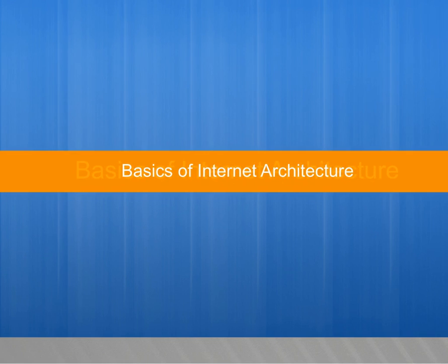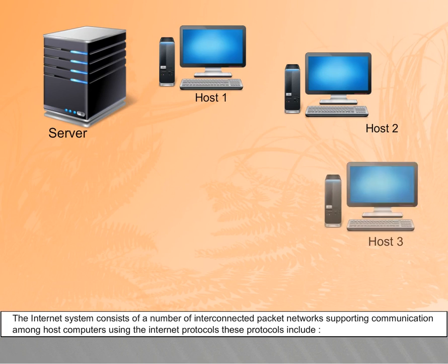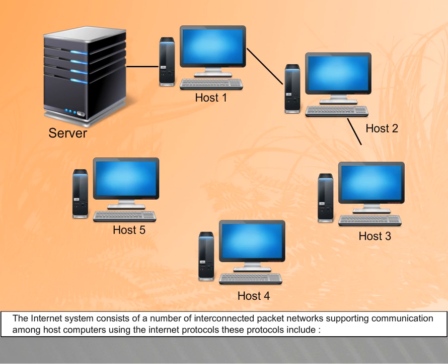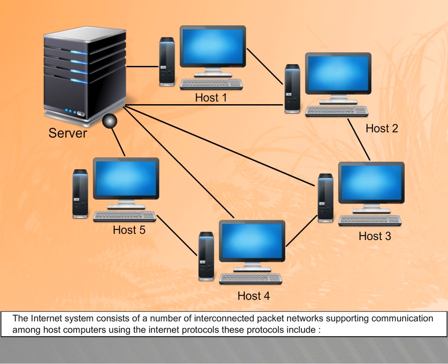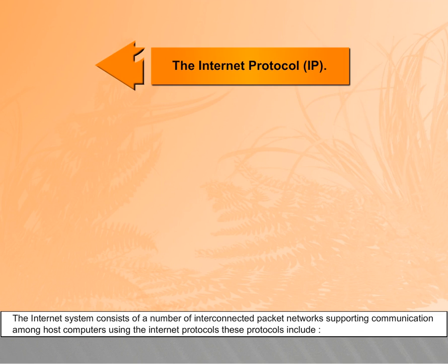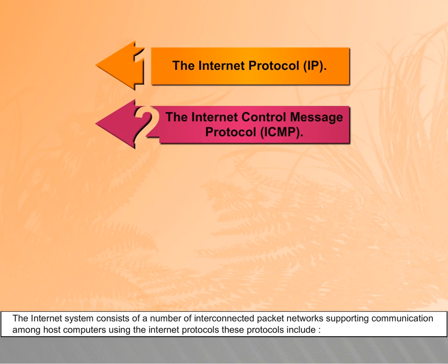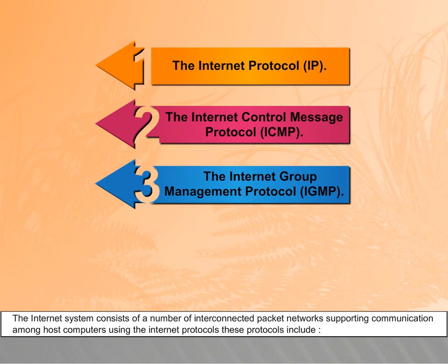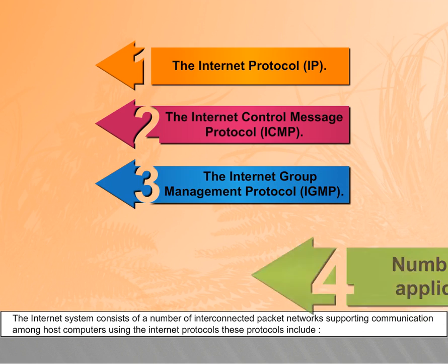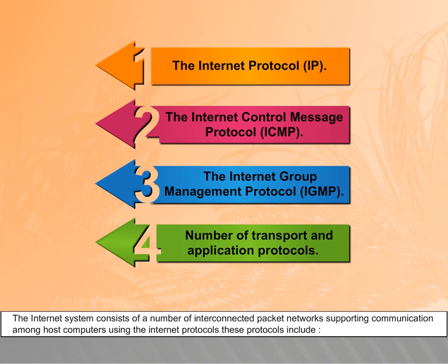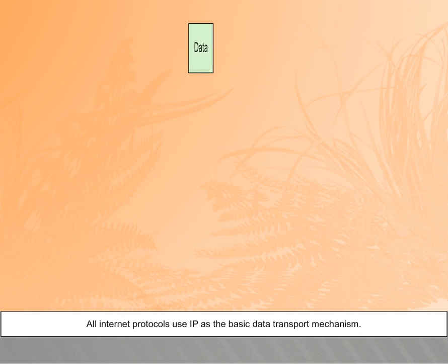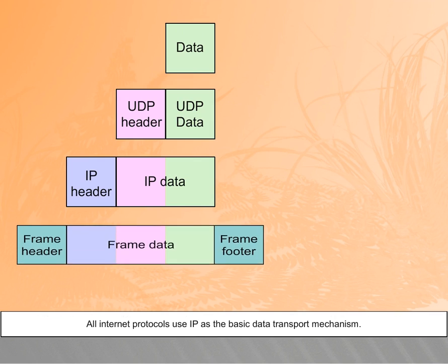The internet system consists of a number of interconnected packet networks supporting communication among host computers using the internet protocols. These protocols include the Internet Protocol IP, the Internet Control Message Protocol ICMP, the Internet Group Management Protocol IGMP, and a number of transport and application protocols. All internet protocols use IP as the basic data transport mechanism.